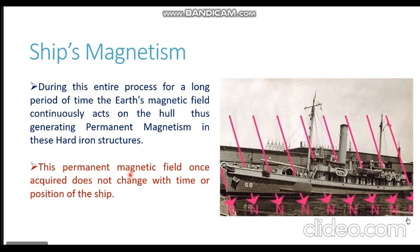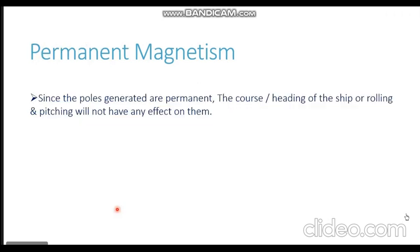This is permanent magnetism — once the material acquires it, it will not change with time or with the position of the ship. The permanent magnetism once acquired remains in the structure and will not change when the ship changes its position. Since it is permanent magnetism, the poles generated are also permanent — a blue pole where the lines enter and a red pole where they leave. The course, heading, rolling, or pitching of the ship will not have any effect on these poles.